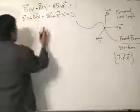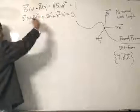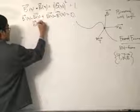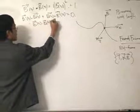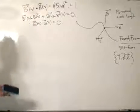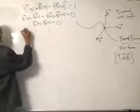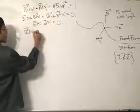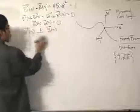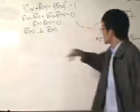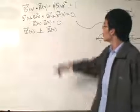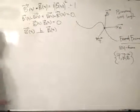Dividing both sides by 2 gives us dB/ds · B = 0. This is our first result: the first derivative of B with respect to s is perpendicular to the binormal vector B. This is what it means — the first derivative of the binormal vector is perpendicular to the binormal vector itself. We will use this information as we build the full theory.